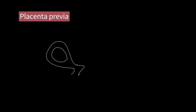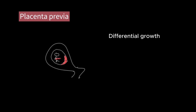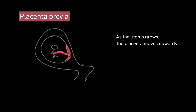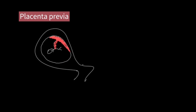Most low-lying placentas early in pregnancy can reverse or normalize by the end of pregnancy. This is because of differential growth of the upper and lower uterine segments — as the uterus grows, the placenta moves upward. In fact, less than 2% of women who have a low-lying placenta by the end of the second trimester actually end up having persistent placenta previa by the end of pregnancy.